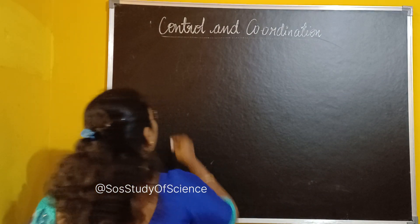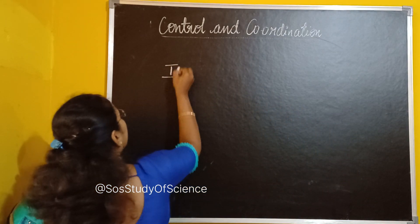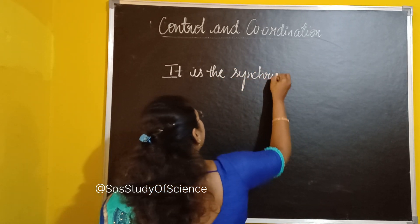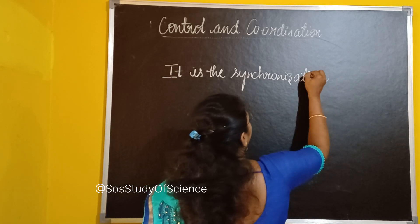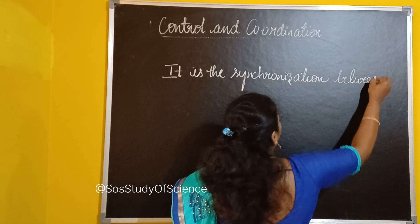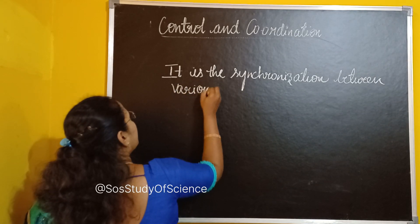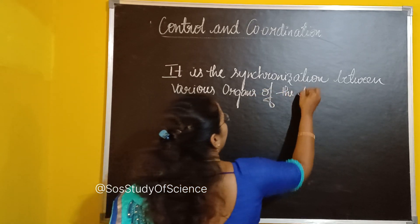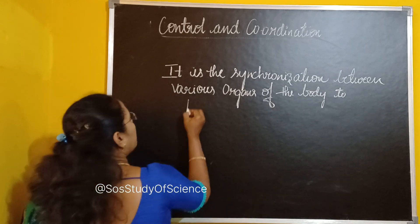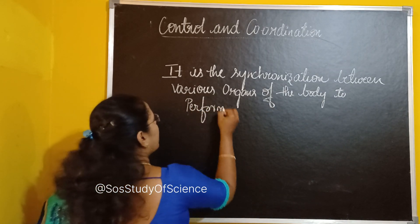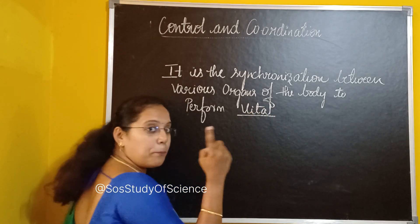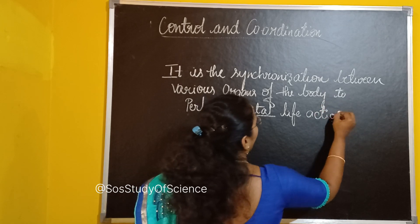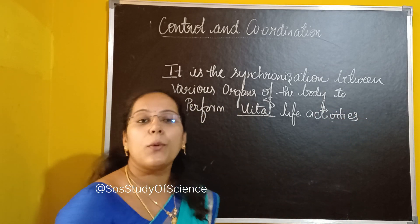So please note down the definition of control and coordination with respect to this lesson: It is the synchronization between various organs of the body to perform the vital life activities — or we can also say life processes. This is the meaning of control and coordination.